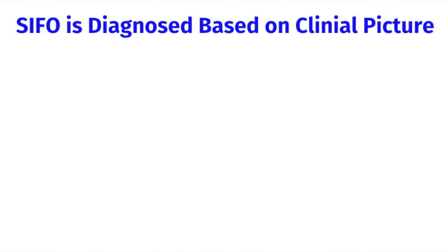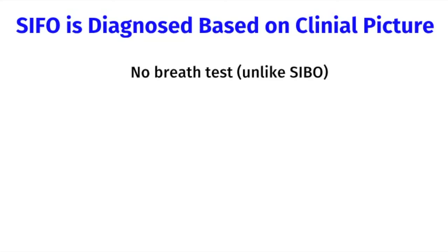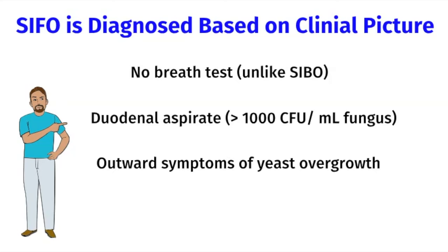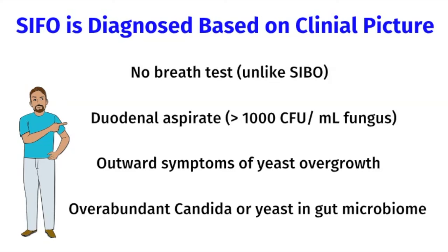SIFO has to be diagnosed based on the clinical picture. Unlike SIBO, we can't use a breath test. The most accurate way to diagnose SIFO is to do an endoscopy and aspirate the duodenal juice and grow it in the laboratory. If there's over a thousand-fold growth of Candida or a fungus, then this is the official diagnosis of SIFO. Unfortunately, this technique is only done by Dr. Satish Rao at Augusta University. That's why in most cases, SIFO has to be diagnosed based on the clinical picture — if a patient has chronic bloating and IBS symptoms, outward signs of yeast overgrowth, and a gut microbiome test showing an overabundance of Candida or other yeast, then we can make the diagnosis.